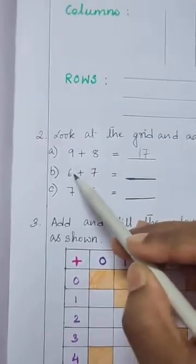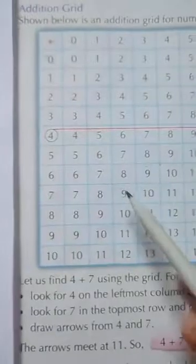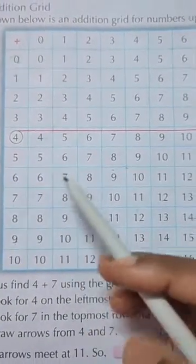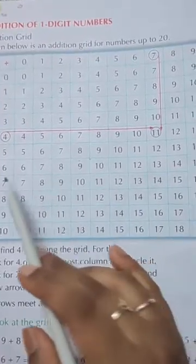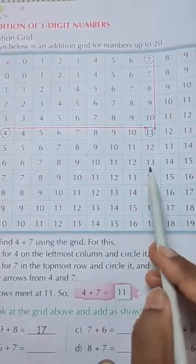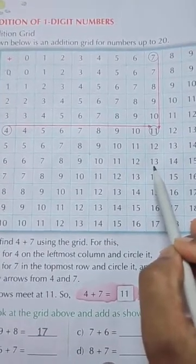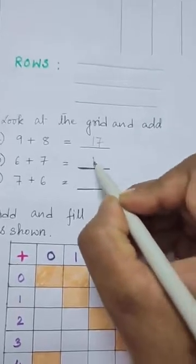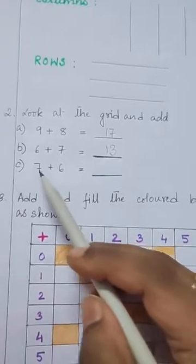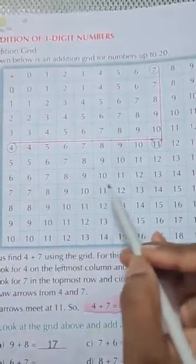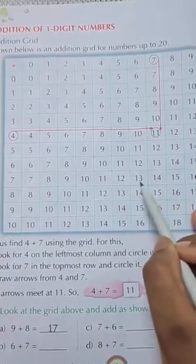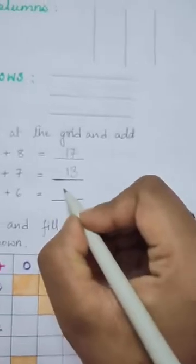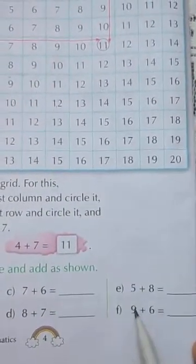Number B: 6+7. Find 6 in the first column and 7 in the first row — move across and down — the answer is 13. Number C: 7+6. Find 7 in the column and 6 in the row, and the answer is again 13. Now you will do D, E, and F on your own in the same way.